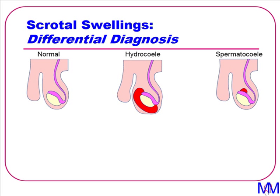Here is an example of a spermatocele. It is slightly different in that it is more cyst-like, and it is separate to the testicle, but it is related to the epididymis. So it is very commonly at the superior pole. The important thing here is that it is separate to the testicle itself. Note that sometimes spermatoceles are slightly transilluminable, but because the contents aren't clear fluid, they are not brilliantly transilluminable as a hydrocele is.